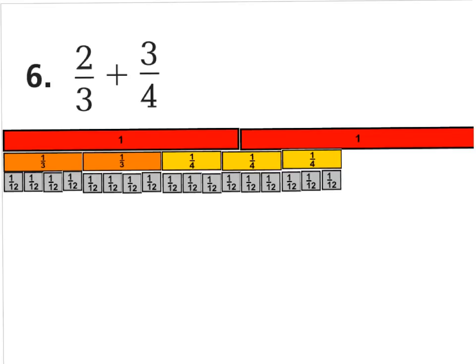For question number 6, we have 2/3 plus 3/4. I went ahead and laid down 2/3 and 3/4, and put a whole piece right above it. I noticed it goes past my one whole, so I added another whole there. This shows me that 2/3 plus 3/4 is going to be greater than a whole but less than two wholes.